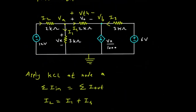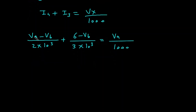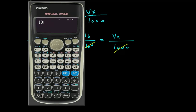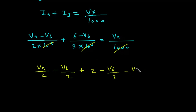Here we can see that Vx = VA. So we can write VA/1000. The 10³ terms cancel throughout. What remains: (VA − VB)/2 + (6 − VB)/3 = VA/1. Simplifying: VA/2 − VB/2 + 2 − VB/3 = VA. Taking VA to the left side gives −(1/2)VA − (5/6)VB + 2 = 0. Rearranging: −(1/2)VA − (5/6)VB = −2. This is equation number 2.